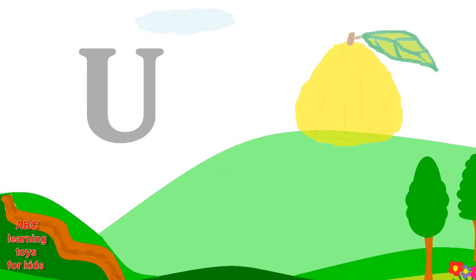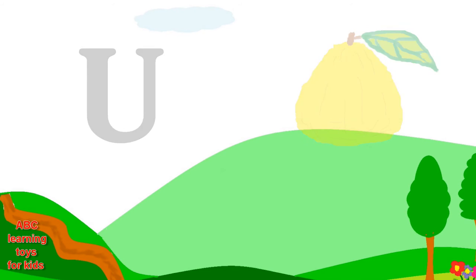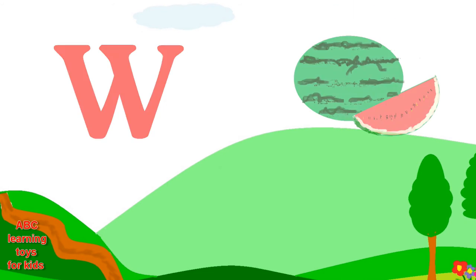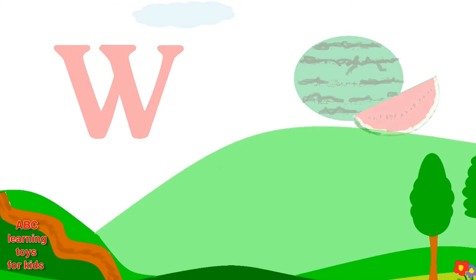U is for ugly fruit. V is for vovanga. Vovanga. W is for watermelon. Watermelon.